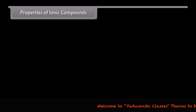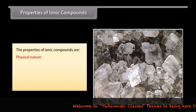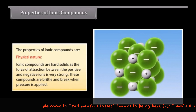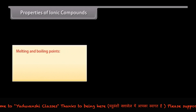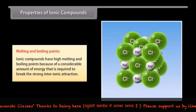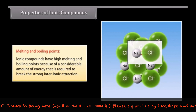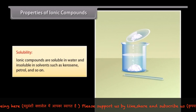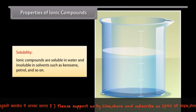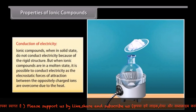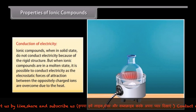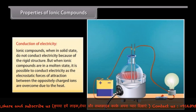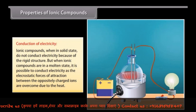Properties of ionic compounds. Physical nature: ionic compounds are hard solids, as the force of attraction between positive and negative ions is very strong. These compounds are brittle and break when pressure is applied. Melting and boiling points: ionic compounds have high melting and boiling points because a considerable amount of energy is required to break the strong inter-ionic attraction. Solubility: ionic compounds are soluble in water and insoluble in solvents such as kerosene, petrol, and so on. Conduction of electricity: ionic compounds in solid state do not conduct electricity as ion movement is not possible due to the rigid structure. But in a molten state, it is possible to conduct electricity as the electrostatic forces of attraction are overcome due to heat, allowing ions to move freely.